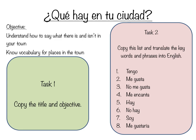For the lessons you're going to do over the next few weeks, it's a good idea to have your exercise book with you, but no problem if you don't — just have some paper or a notebook handy, because you are going to do a little bit of writing. The objective of this first lesson is to understand how to say what there is and what there isn't in your town, and we're also going to learn vocabulary for places in town. First, pause this video, copy down the date, the title, and the objective, and then let's get started on task two.